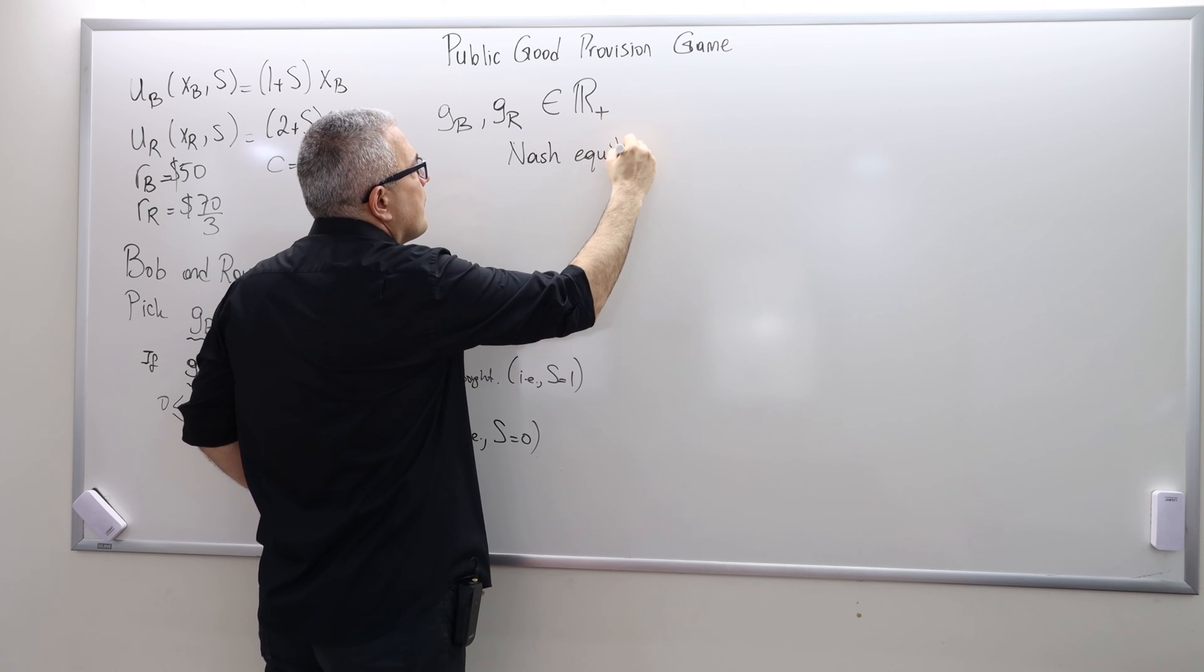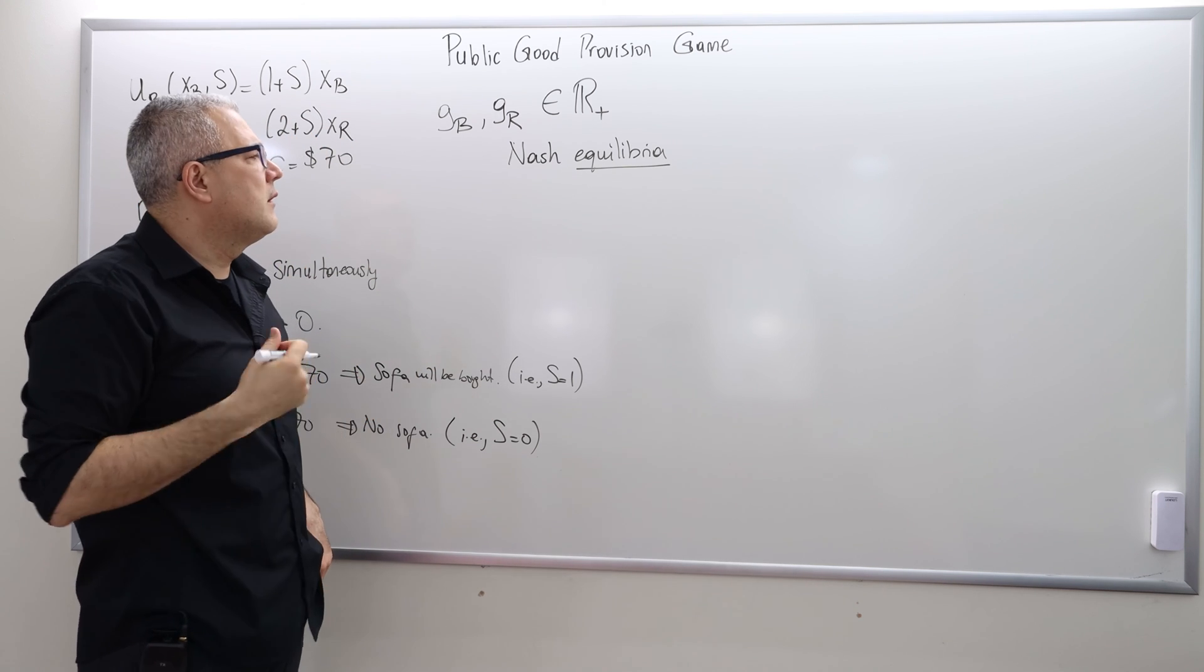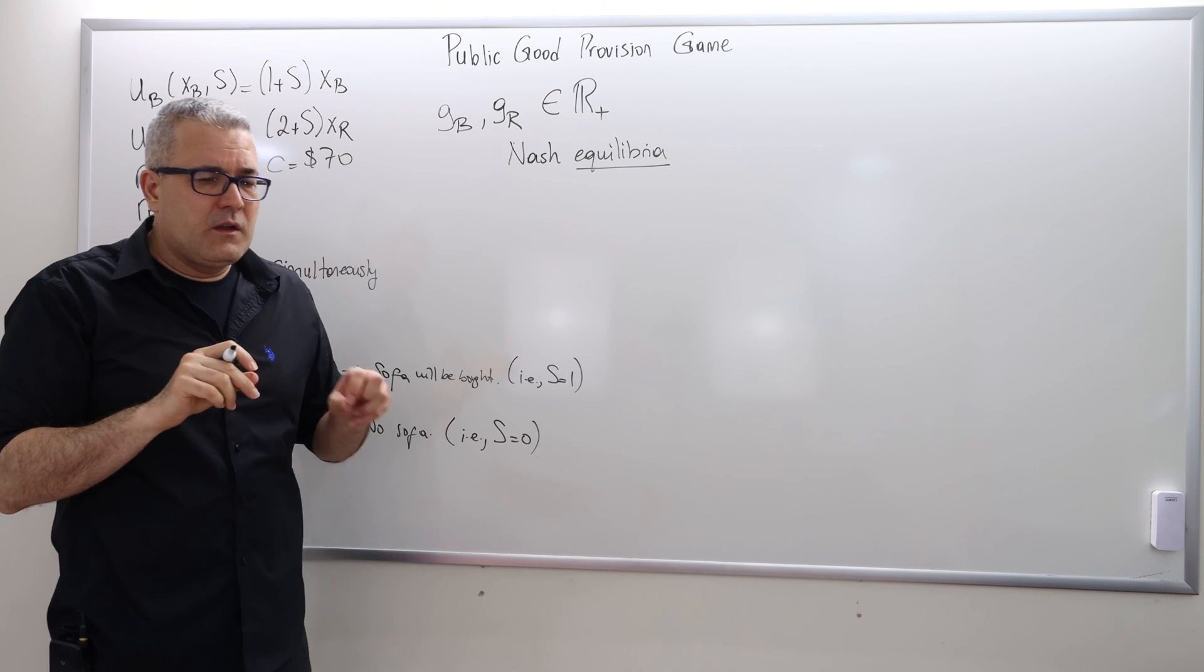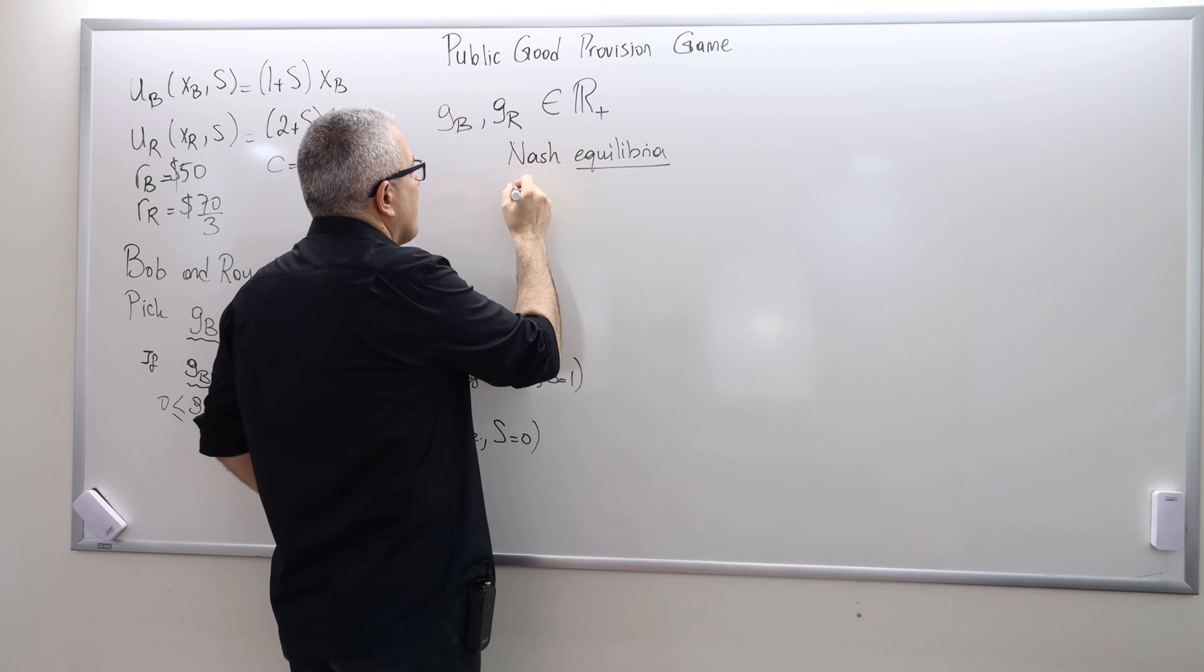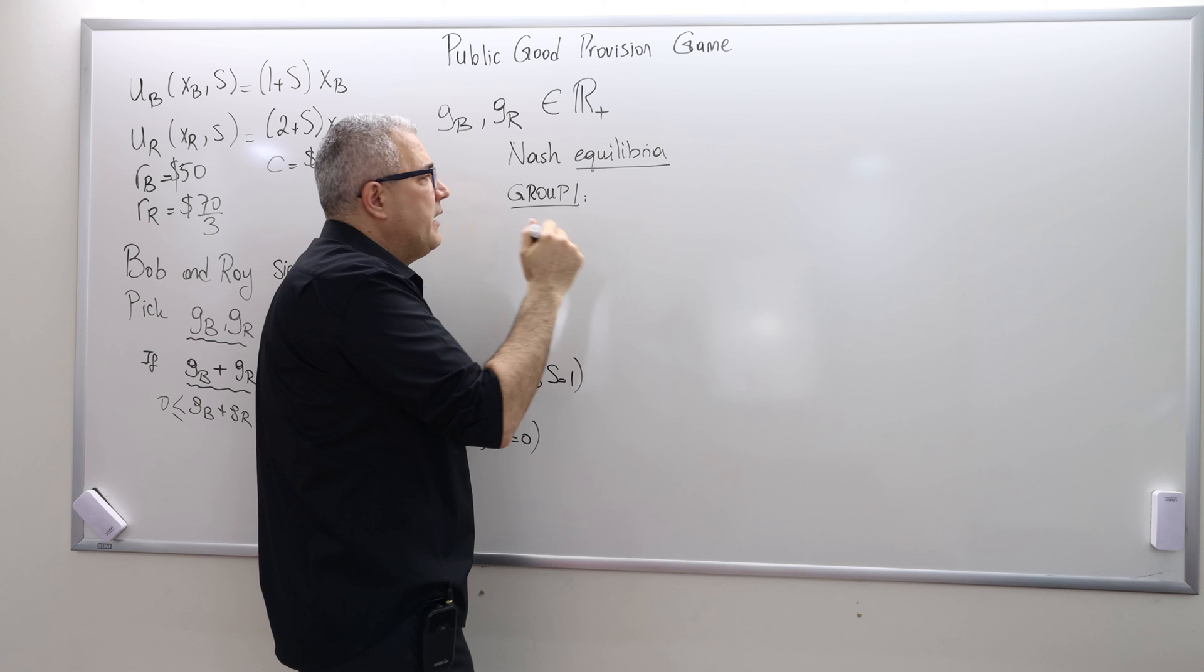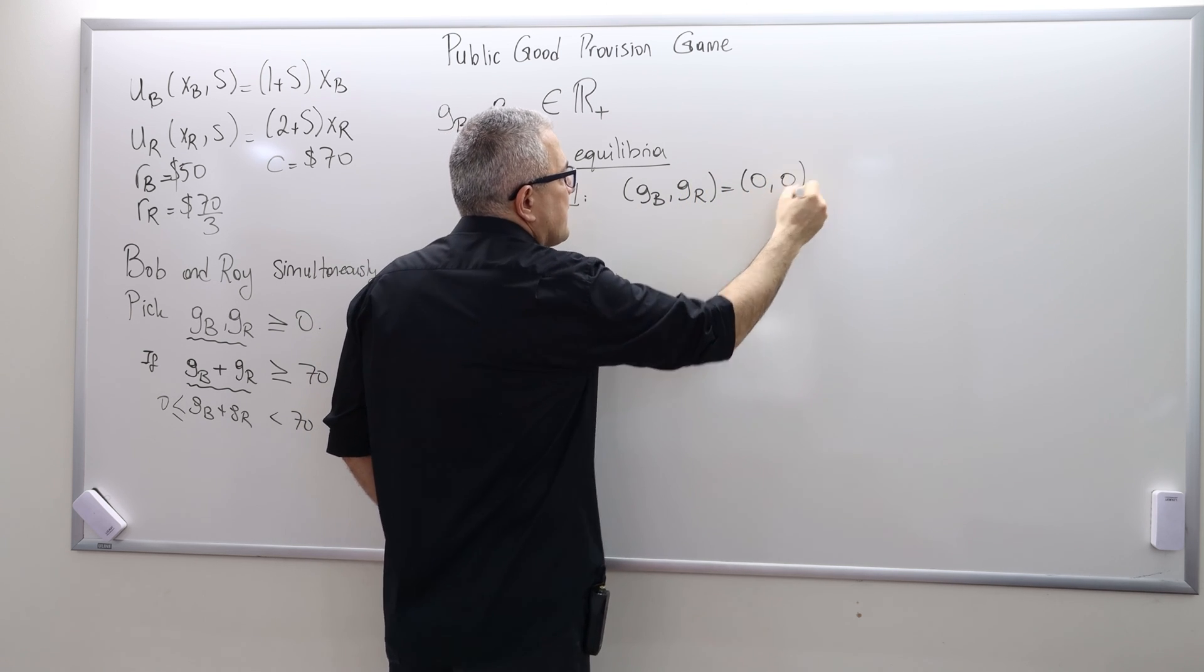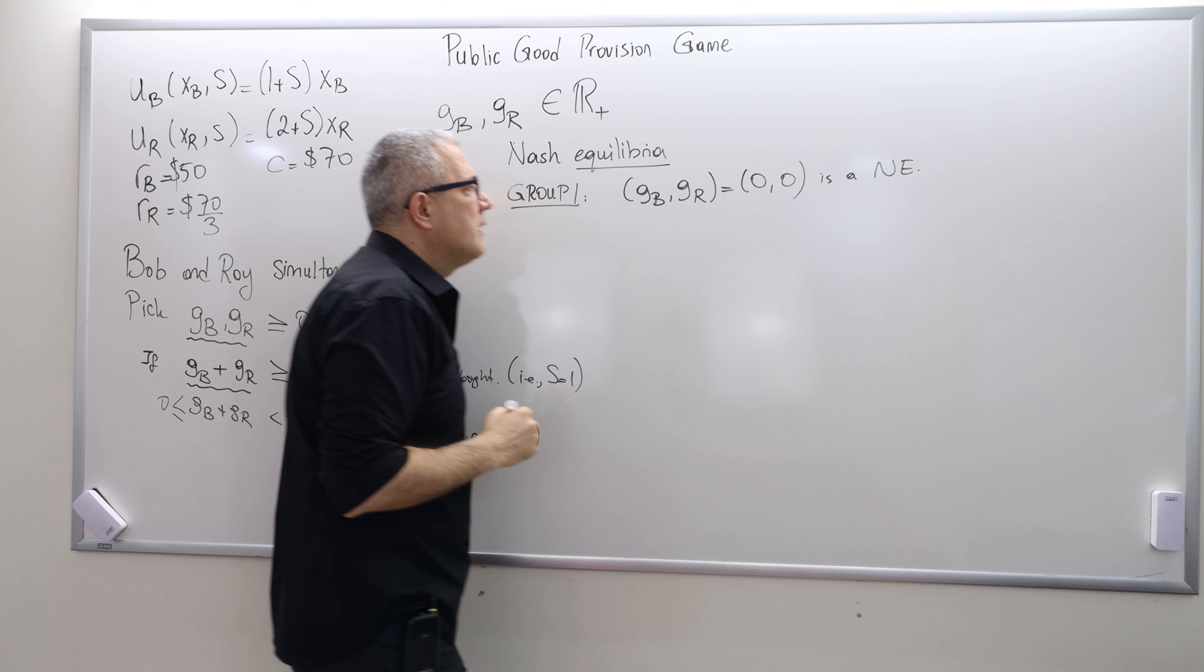In that sense it's relatively a hard game, but we nevertheless can talk about the Nash equilibria of this game. So the equilibria is the plural version of equilibrium. And in this game there are in fact infinitely many possible equilibria. However, these infinitely many possible equilibria can be divided into two groups. So group one, there's only one equilibrium. Bob and Ray, they both contribute $0. So this is a Nash equilibrium.